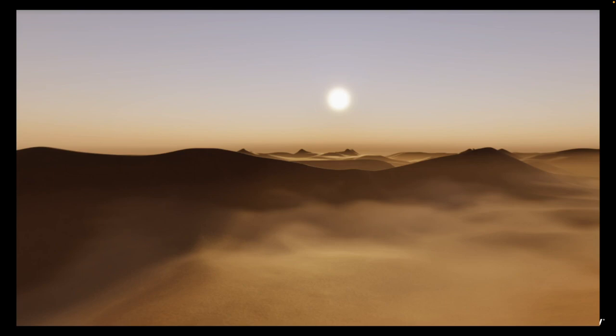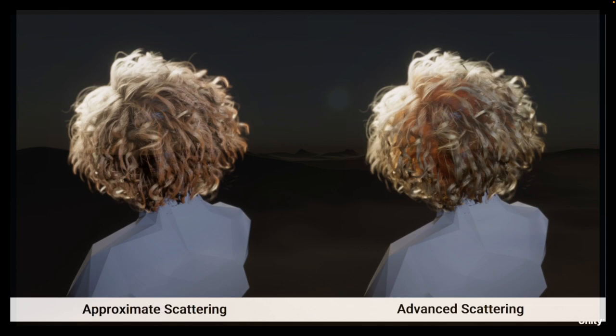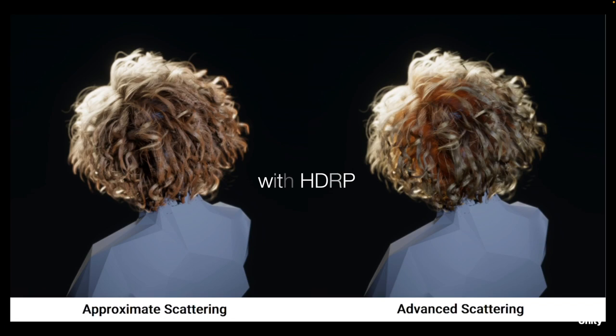For realistic hair and fur, the HDRP hair shader offers a brand new physical mode which uses a Marschner-based lighting model in addition to the existing approximate Kajiya-Kay model. This new parameterization is easier to set up and more appropriate for photoreal strand-based rendering, exposing the physical parameters of hair, while the Kajiya-Kay model offers greater artistic control and faster performance but is harder to set up and slightly lower quality.